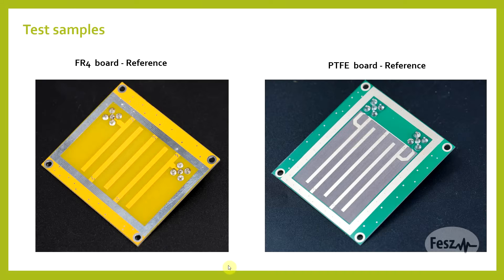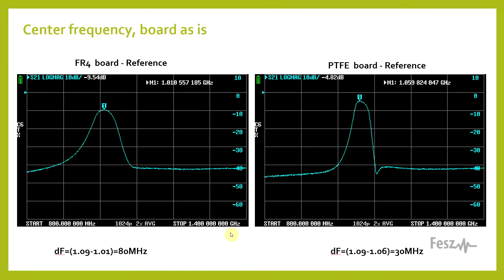Are the measurement results for the tested boards anywhere near the calculated center frequency? The short answer is yes. The center frequency for the FR4 board measured at around 1.01 GHz, about 80 MHz lower than expected. For the PTFE board, we are a bit closer at 1.06 GHz, so only 30 MHz lower. Looking at the two measurements, we can already observe the impact of the board material: the insertion loss for the FR4 is about −9.5 dB, whereas for the PTFE it's only −4.8 dB.